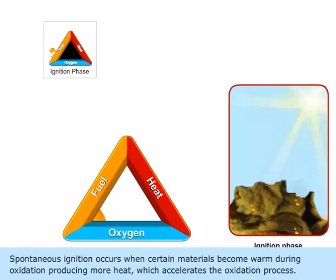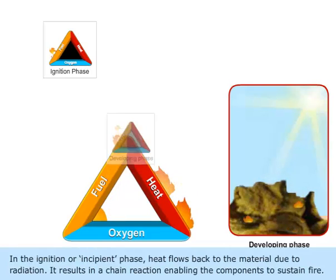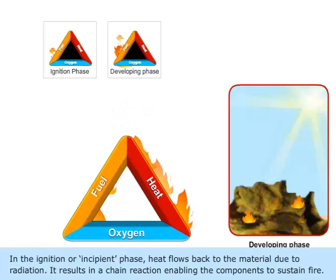Spontaneous ignition occurs when certain materials become warm during oxidation producing more heat which accelerates the oxidation process. In the ignition or incipient phase, heat flows back to the material due to radiation. It results in a chain reaction enabling the components to sustain fire.